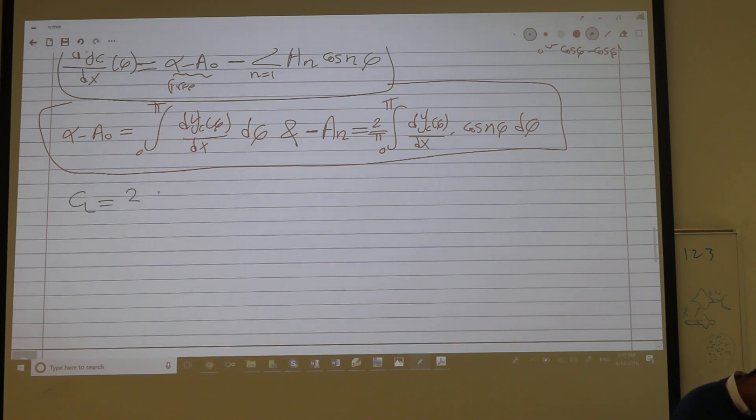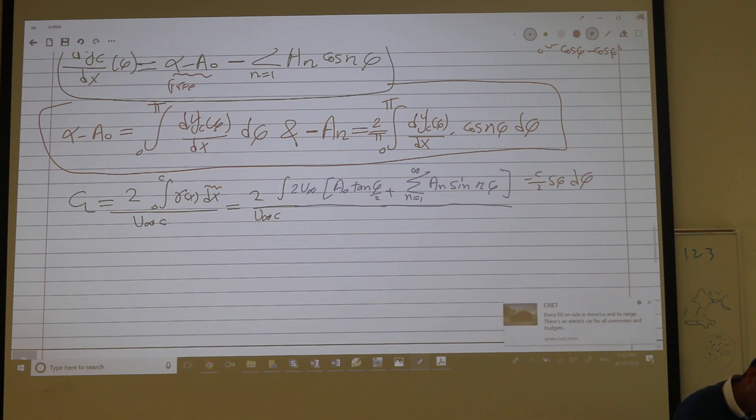So the lift was two, the total gamma divided by u infinity c. So it's two over u infinity c integral. I'll substitute for my gamma, which if you remember was two u infinity a nought tan phi over 2 plus summation a n sine n phi. And the dx as usual is negative c over 2 sine phi d phi. So you can carry out the integrations fine.